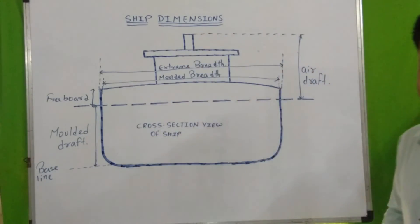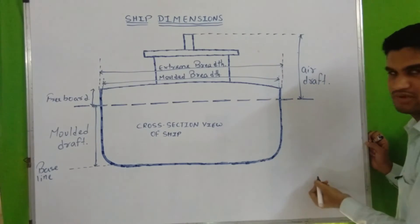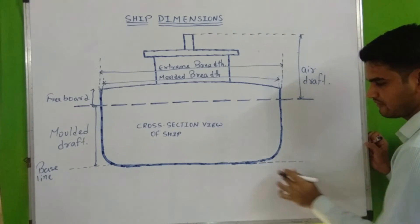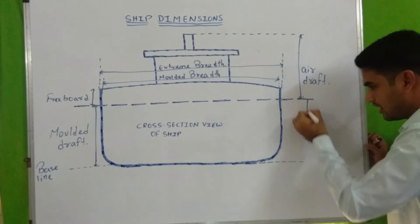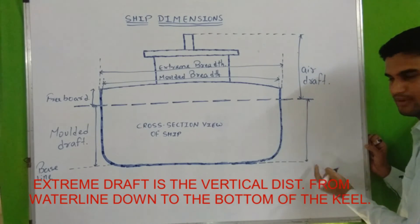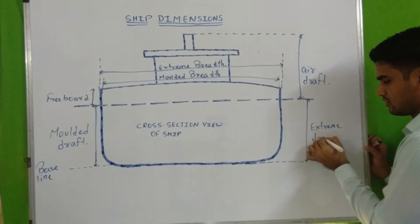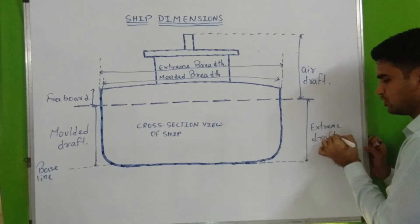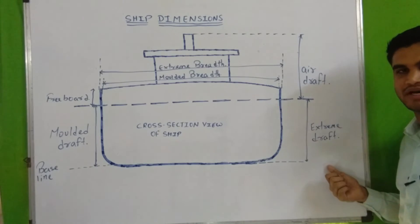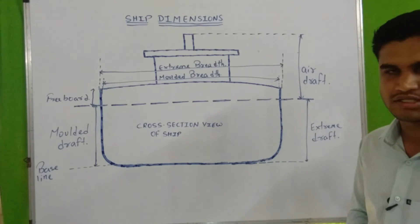Extreme draft means the distance from water level to the bottom of the keel plate. This is known as extreme draft. Molded draft is actually used by naval architects for their designs, and extreme draft is actually used by masters, mates, and port authorities for under-keel clearance.